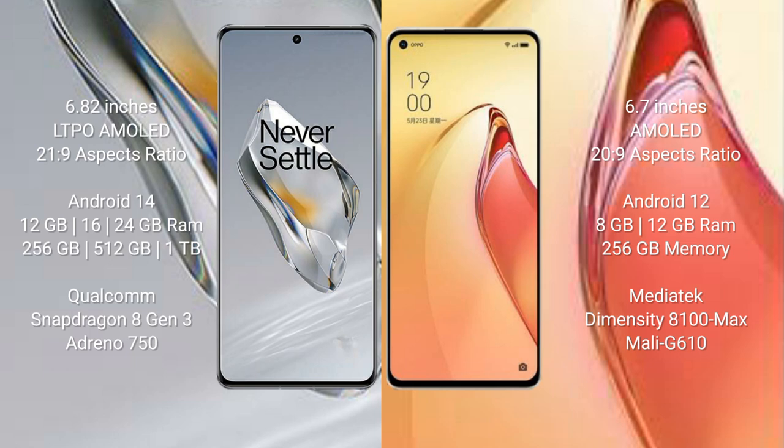OnePlus 12 comes with 12GB, 16GB, or 24GB RAM and 256GB internal storage, powered by a Qualcomm Snapdragon 8 Gen 3 processor with Adreno 750 GPU.